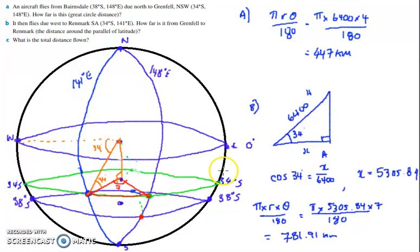Part C is what is the total distance flown. The total distance flown is this answer because we've flown from here to there and then this answer added together because then we flew from there to there. So if we add those two answers together, part C: 1228.91 kilometers.